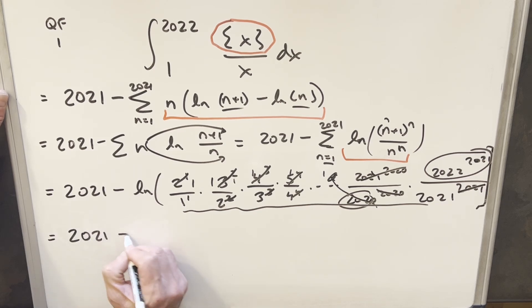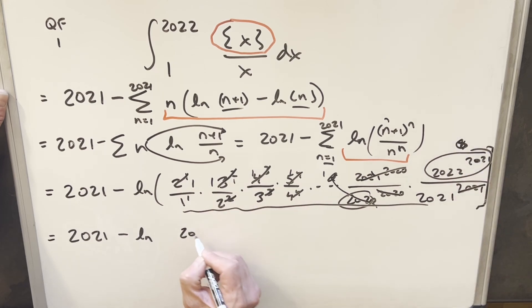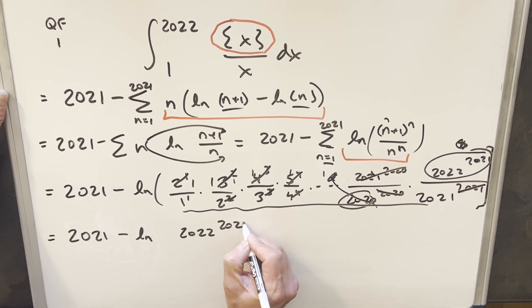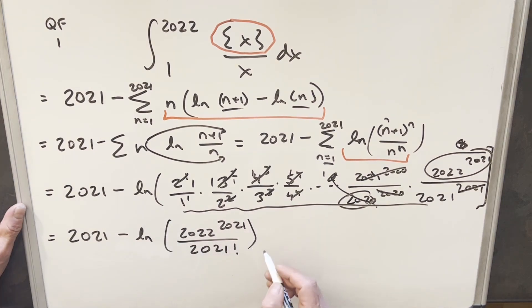So we're still going to have our 2021 here. We have our natural log. The only thing we have in the numerator is this right here. So we're going to have 2022 to the 2021. And then in the denominator, we just have all these terms just raised to the 1 power. So we have 1 times 2 times 3 times 4 all the way to 2021. What's that? Well, that's just going to be 2021 factorial. I'll just put a parentheses around that.